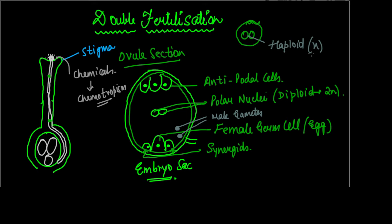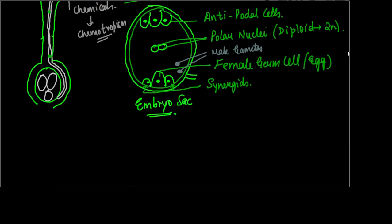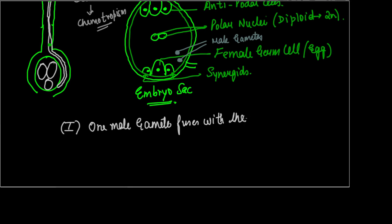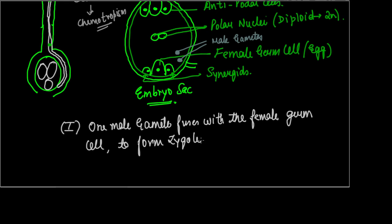Now two steps are going to take place. Step one: one male gamete fuses with the female germ cell to form a zygote. The zygote is diploid because the female germ cell is haploid and the male gamete is also haploid — both fuse to form the diploid zygote.